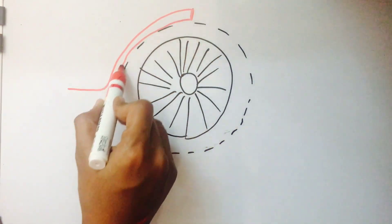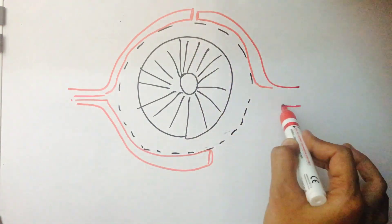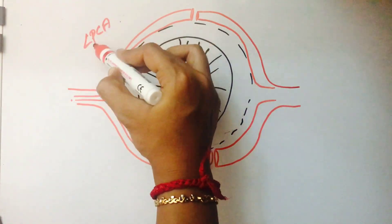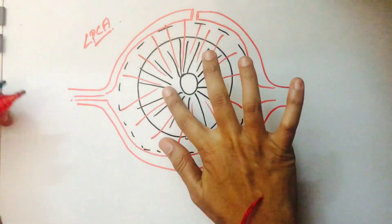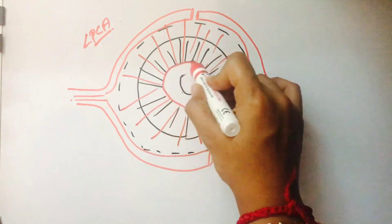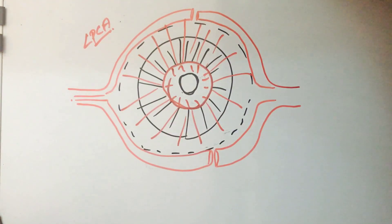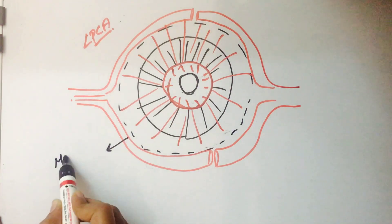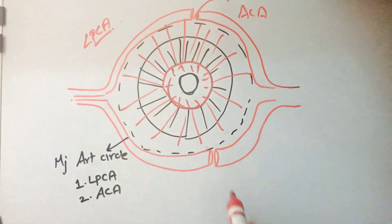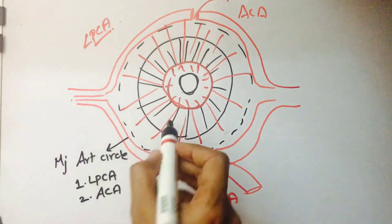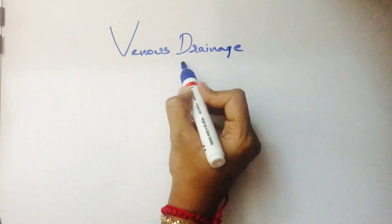To understand the arterial circle, consider the front view: ciliary body, then iris and pupil. The long posterior ciliary arteries from both sides anastomose with each other and with the anterior ciliary arteries to form the major arterial circle. This major arterial circle gives branches to the iris and forms a smaller arterial circle called the minor arterial circle around the pupil.